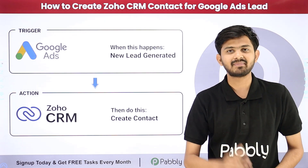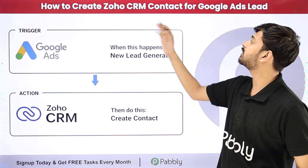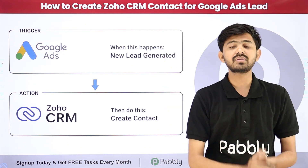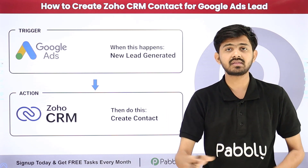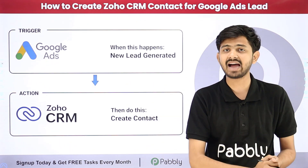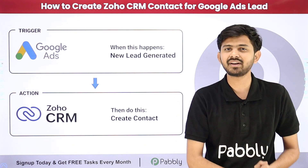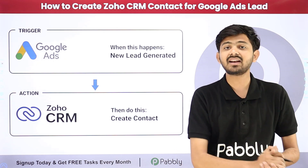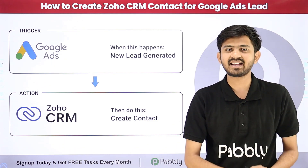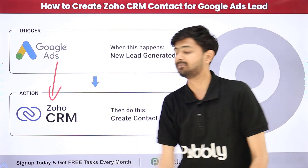Hello everyone, welcome back to Pabbly. Today our topic is how to create a Zoho CRM contact for a Google Ads lead. I'm using Google Ads for promoting my business, and whenever I receive a new lead through Google Ads, I want to automatically use that lead's details to create a new contact in my CRM application, Zoho CRM.